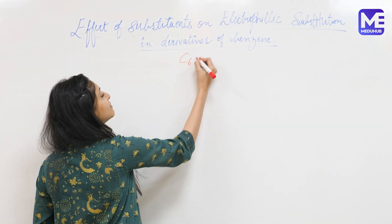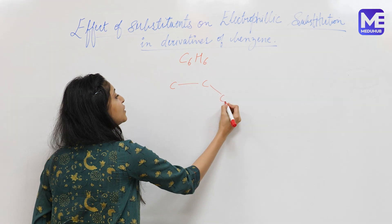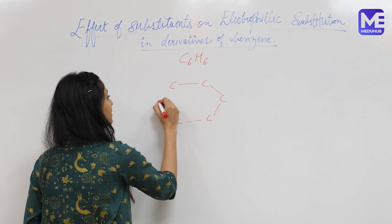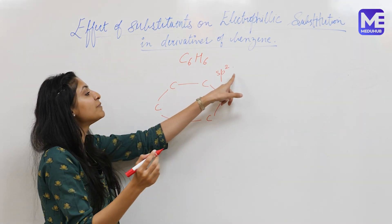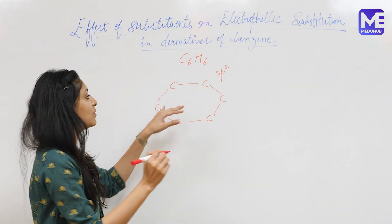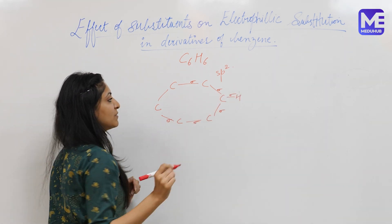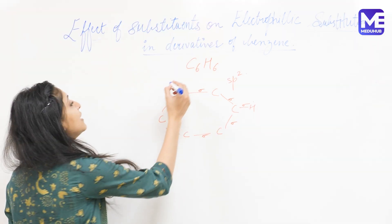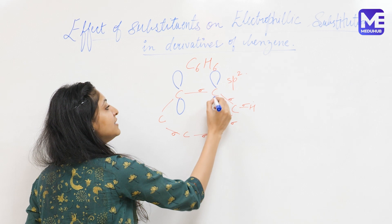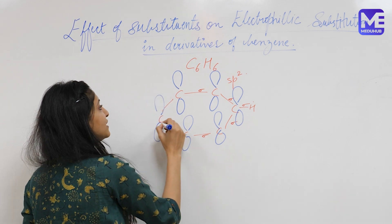Benzene has the molecular formula C6H6. All six carbon atoms form a ring and they lie in a plane. Each carbon atom is sp2 hybridized, meaning the three sp2 orbitals lie in the plane and form sigma bonds — all bonds in the ring are sigma bonds, and the bond formed with hydrogen is also a sigma bond. The unhybridized p orbital on carbon lies above and below the plane, perpendicular to the plane of the molecule. There are six pi electrons in these orbitals.